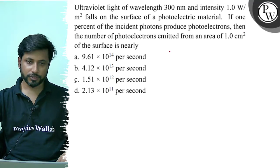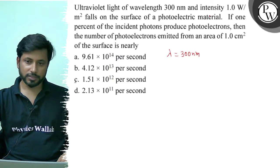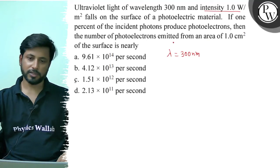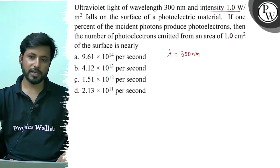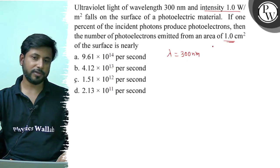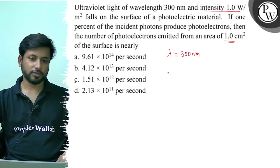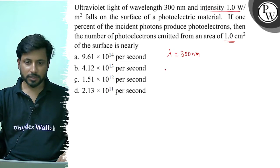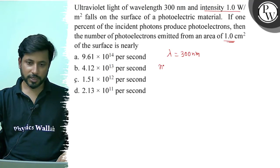To key: incident photon ki wavelength lambda = 300 nanometer, intensity = 1 watt per meter square, aur hame nikalna hai one centimeter square se emitted photons ki sankhya. So sabse pehle nikaal lete hain ki number of photons kitne emit ho rahe hain.